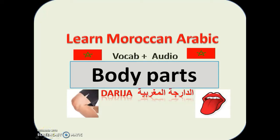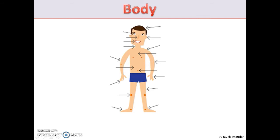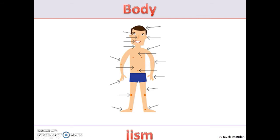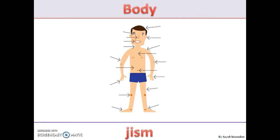Hello, today's lesson is going to be about body parts, so let's start. گسم — sometimes we add the 'l' before the noun as a definite article, like when we say 'the body': گسم, ل گسم. But not for all nouns.